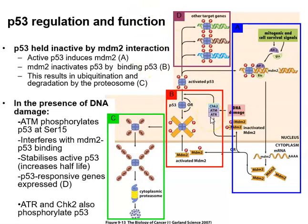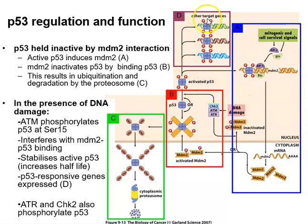P53 protein is a sensor of DNA damage. When DNA damage occurs, P53 becomes phosphorylated by specific enzymes producing activated P53, which drives P53 response genes: BAX drives apoptosis, P21 drives cell cycle arrest, and DNA damage repair genes are also activated. This allows the cell to repair DNA damage whilst preventing proliferation and priming the cell for apoptosis, just in case the DNA damage cannot be repaired.